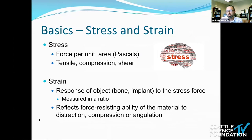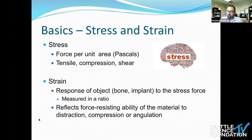This translates into the concept of stress and strain. Stress is force per unit area, measured in pascals, and can take different vectors: tensile, which is a distracting force; compression; or shear. Strain is a deformation response to that stress force on an object, whether bone or implant. It lacks a unit and is measured as a ratio, reflecting the force-resisting ability of that bone or implant to all of the stresses described.